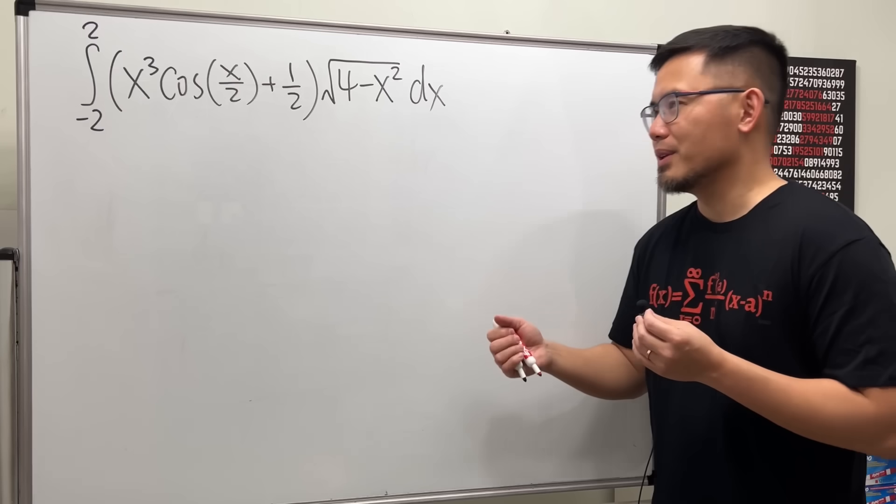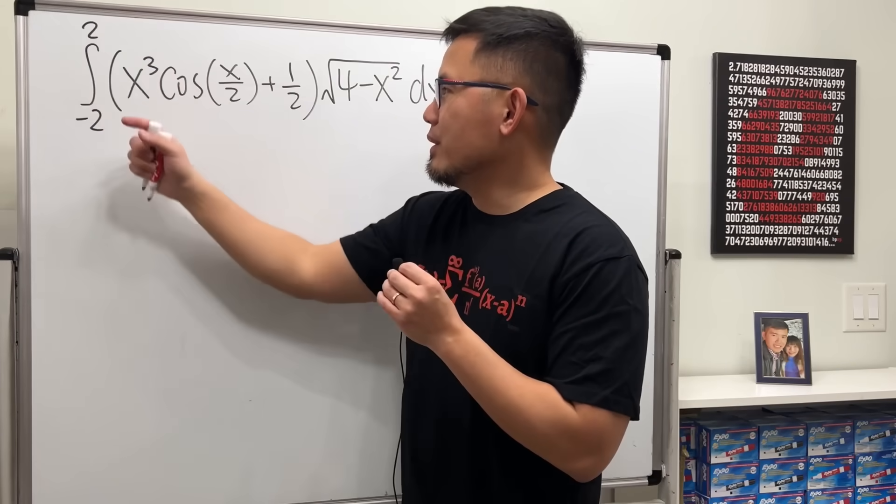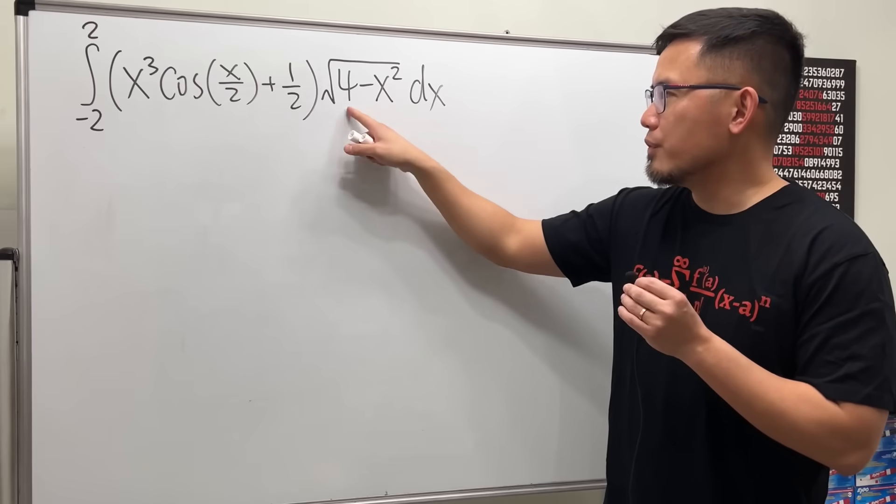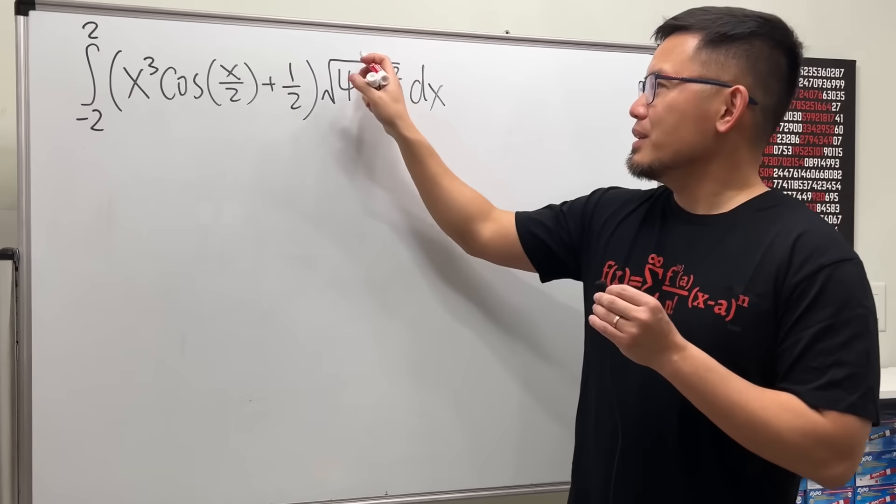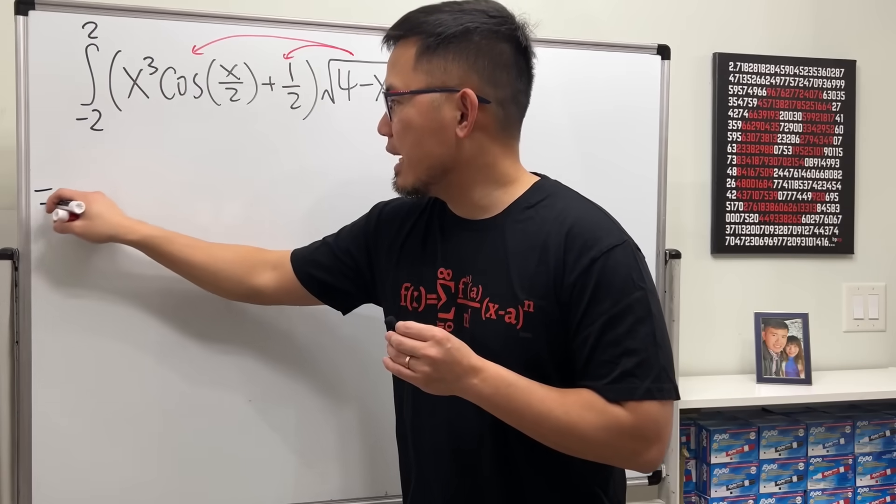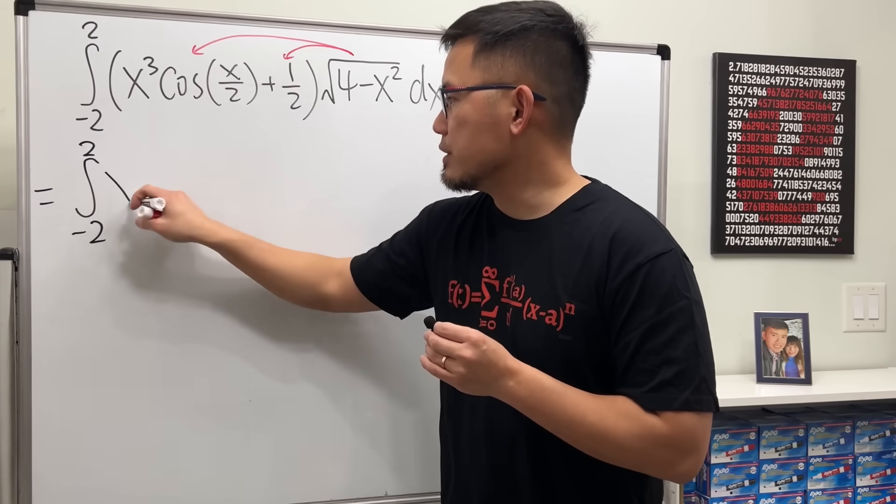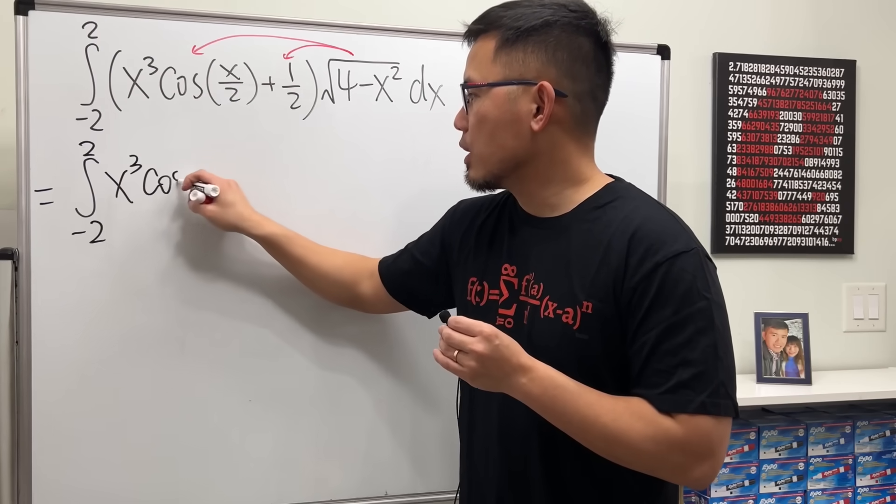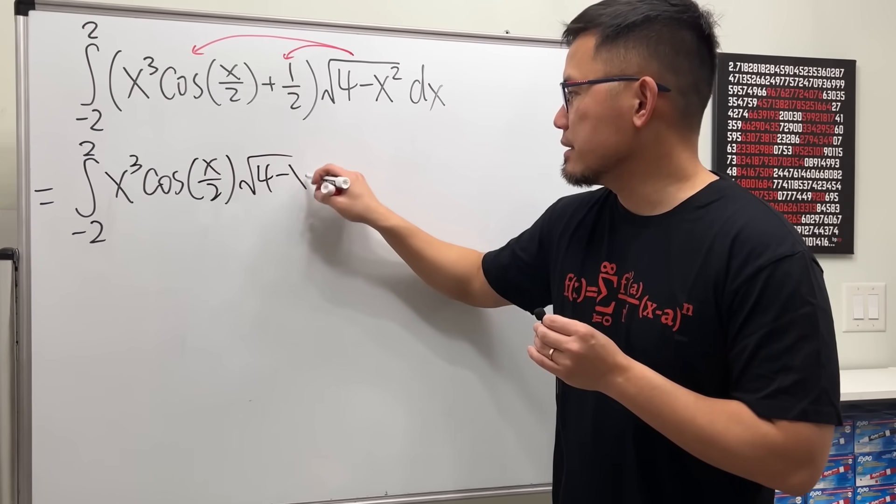Let's see. Integral going from negative 2 to 2 of this quantity times square root of 4 minus x squared dx. The dx should be on the outside. Let's go ahead and distribute this into this part and that part, so we can get integral going from negative 2 to 2 which is x cubed times cosine of x over 2 times square root of 4 minus x squared.